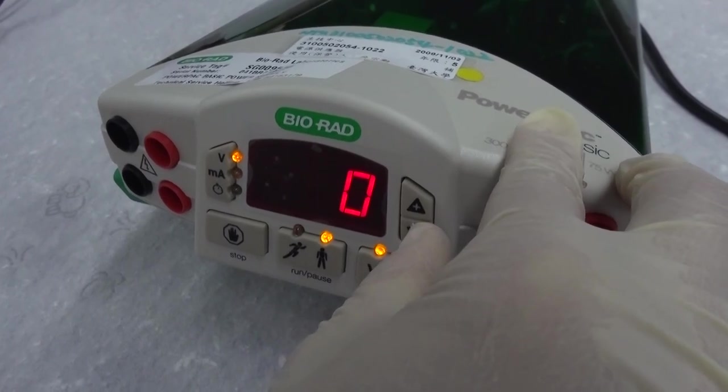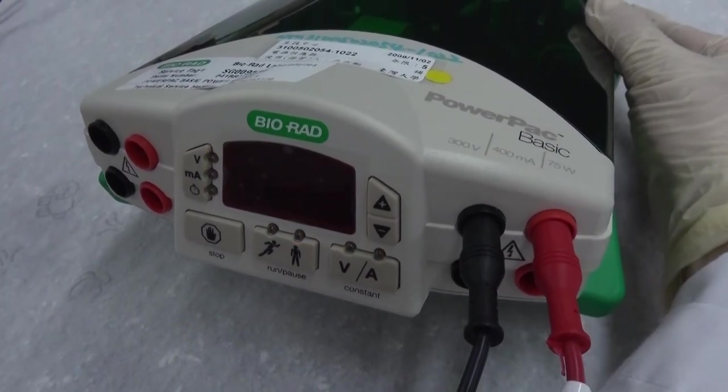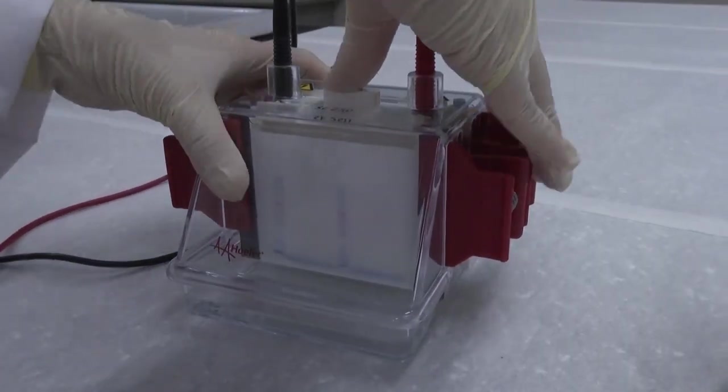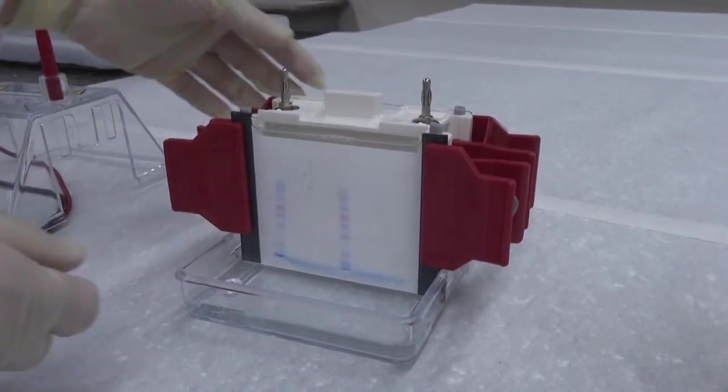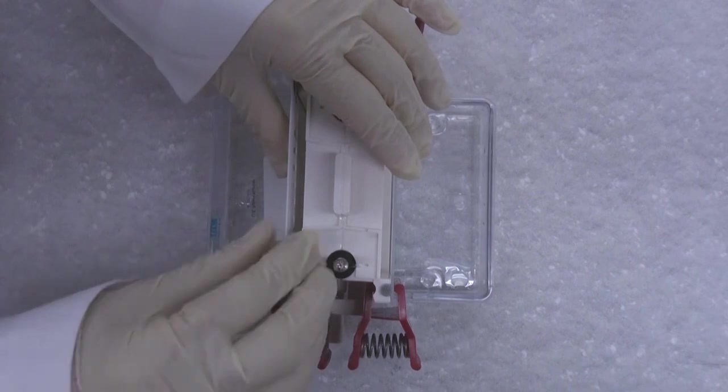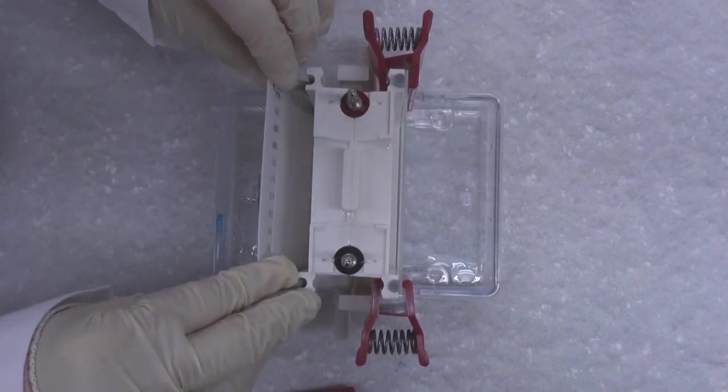Decrease the voltage to zero and turn off the power supply. Disconnect the power lines. Remove the electrophoresis tank lid, pour out the buffer, remove the red clamps, and carefully pour out the gel cassette sandwich.